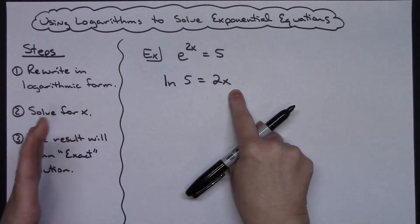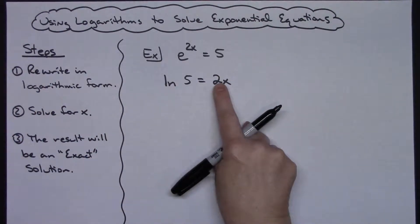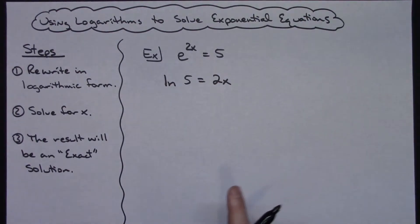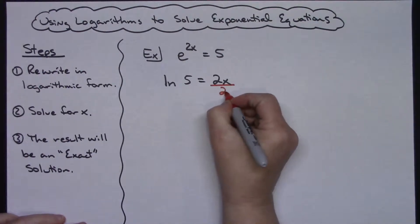Now this is a pretty simple equation. Now I can solve this equation for x. Right here I've got 2 times x, that means I've got to divide both sides of the equation by 2. So if I divide both sides of the equation by 2.